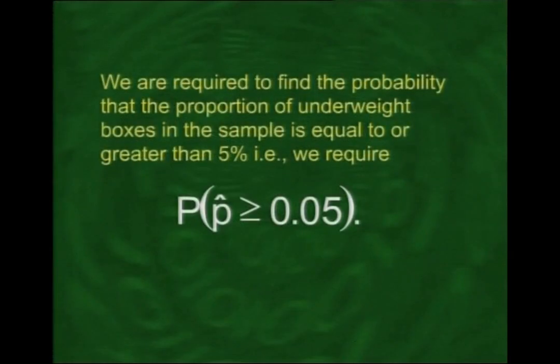The question asks for the probability that, in a sample of size 144, the proportion of underweight boxes is at least 5%. Mathematically, we want P(p-hat ≥ 0.05). An important concept applies here: continuity correction. Whenever we approximate the discrete binomial distribution with the continuous normal distribution, we need to apply continuity correction.